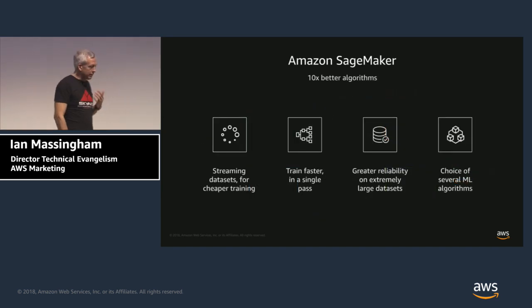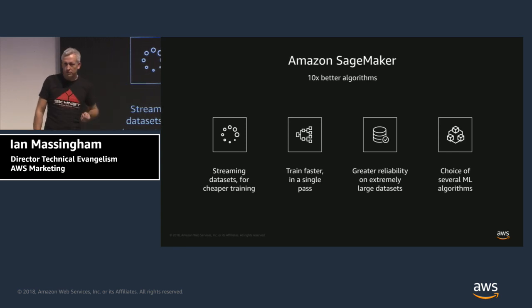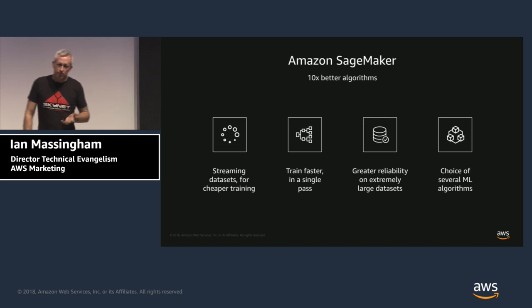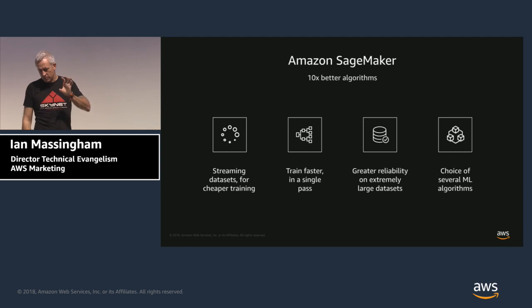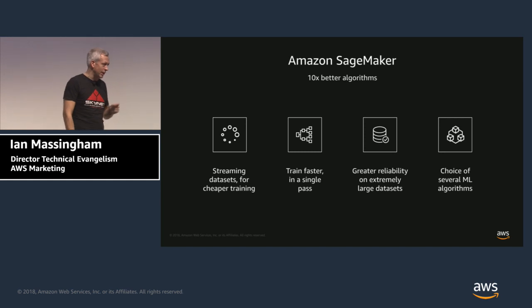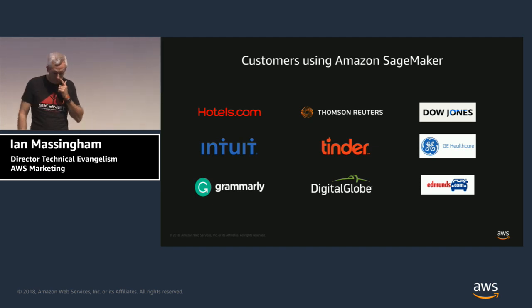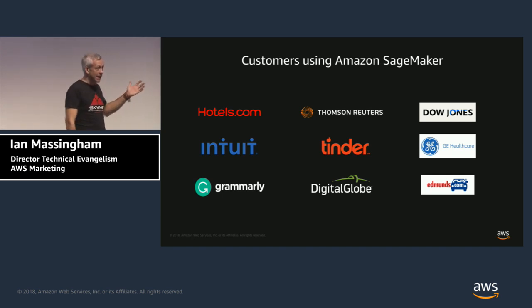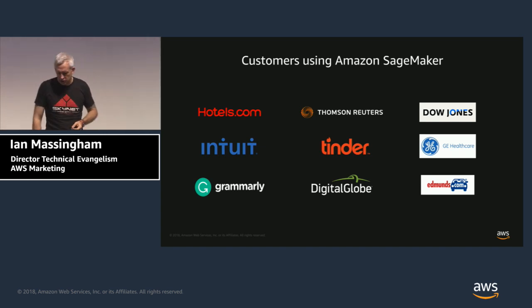Come back later in the day to learn more about SageMaker. Importantly, we've spent a lot of time on algorithm optimization — the 14 built-ins should be considered best in class in terms of performance and efficiency for the use cases they satisfy. If they don't work for you, you can use custom configurations of package containers we provide, or bring your own algorithm inside a Docker container. Lots and lots of customers are using SageMaker today across all kinds of different sectors, including regulated sectors like healthcare and financial services.